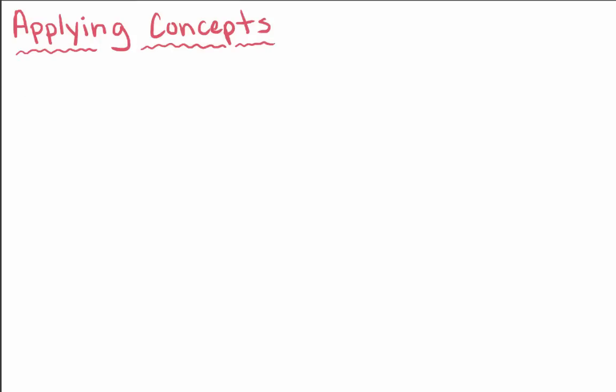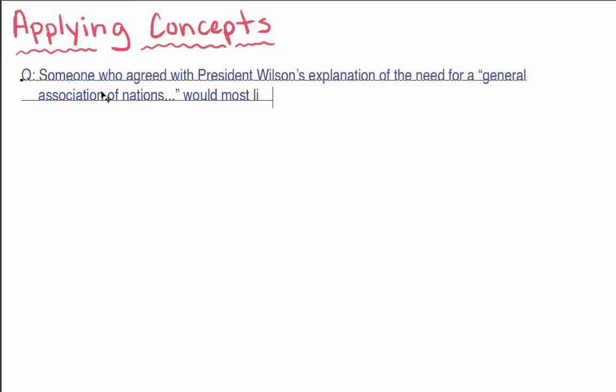Here is an example. Someone who agreed with President Wilson's explanation of the need for a general association of nations would be most likely to also approve of which of the following hypothetical options.